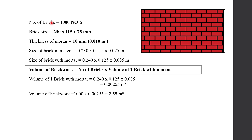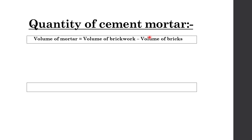With a thousand number of bricks, you can construct a wall of 2.55 cubic meter. A brick wall is composed of two materials: one is cement mortar and the second material is bricks. So if you deduct the volume of bricks from the brickwork, then you will get the volume of mortar.